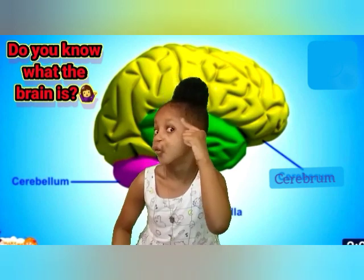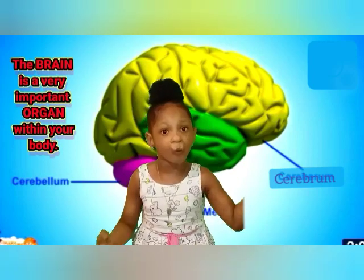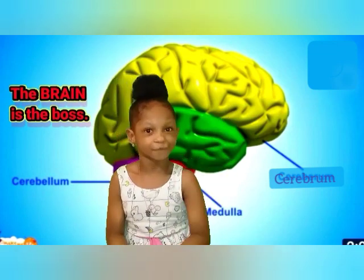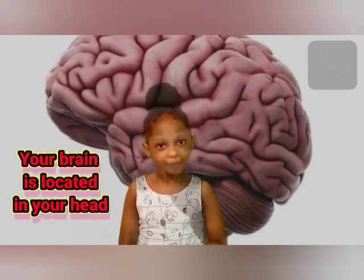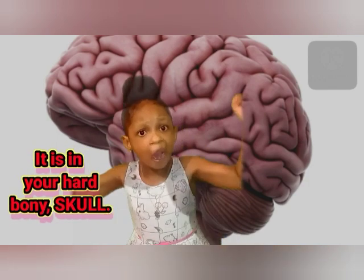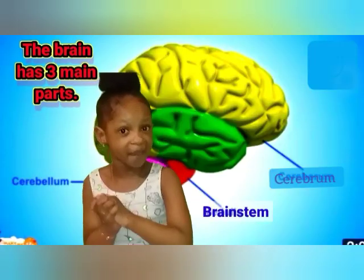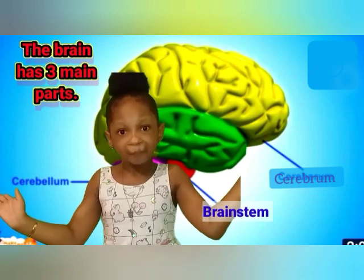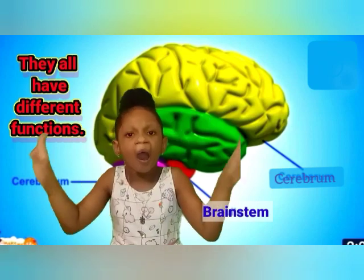Do you know what the brain is? The brain is a very important organ within your body. The brain is the boss. It is pale pink in color. Your brain is located in your head — it is in your hard, bony skull. The brain has three main parts: they are the cerebellum, cerebrum, and the brain stem. They all have different functions.